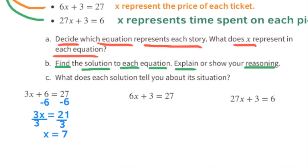For 6x + 3 = 27: subtract 3 from each side, giving 6x = 24. To get x by itself, divide both sides by 6. 6x divided by 6 equals x, and 24 divided by 6 equals 4. So x equals 4.